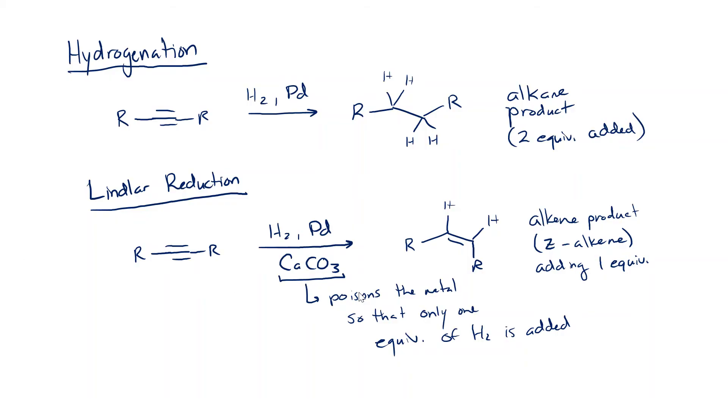Now we only get the Z alkene with Lindlar reductions. And so, of course, the obvious question is, well, what if we don't want the Z alkene? What if we want the E alkene? Can we do that? Would I ask that question if the answer was no? Of course we can do that. We just have to change the conditions a little bit more. So the Lindlar reduction always gives us the Z alkene. It's the same conditions as hydrogenation. We just add the calcium carbonate poison.